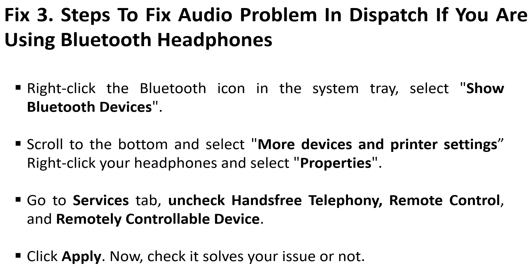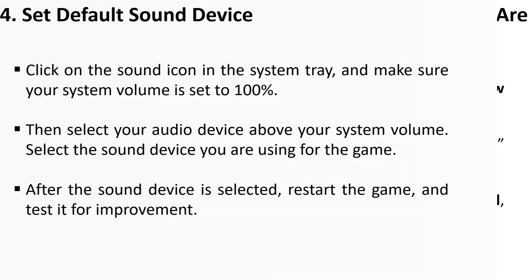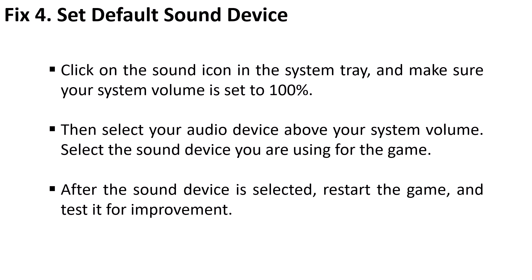Now click Apply and then check if your problem is solved or not. Fix four: set the default sound device. Click on the sound icon in the system tray and make sure your system volume is set to 100 percent. Then select your audio device above your system volume — select the sound device you are using for the game.